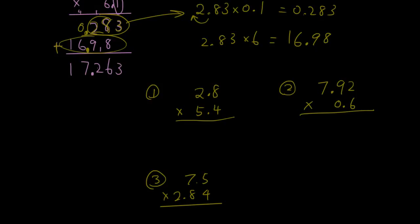So let's do these together. We have 4 times 8 is 32. 4 times 2 is 8. 8 plus 3 is 11. 5 times 8 is 40. 5 times 2 is 10. 10 plus 4 is 14. And add them together. So that's 2, 1, 5, 1. Two numbers after the decimal point, so let's put it in front of two numbers. So the answer is 15.12.